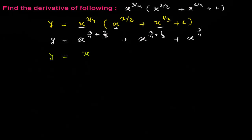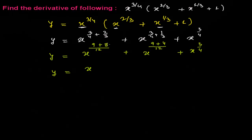Now we take the LCM of 4 and 3, which is 12. So 3/4 plus 2/3 gives 9/12 plus 8/12 equals 17/12. Then 3/4 plus 1/3 gives 9/12 plus 4/12 equals 13/12. So y equals x to the power 17/12, plus x to the power 13/12, plus x to the power 3/4.